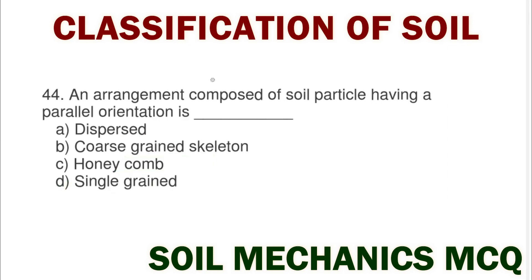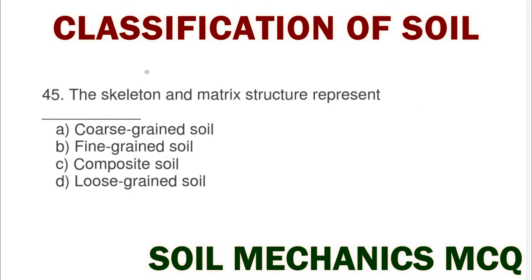Next question: an arrangement of soil particles having a parallel orientation is option A dispersed, option B coarse grain skeleton, option C honeycomb, option D single grain. The correct answer is option A dispersed.